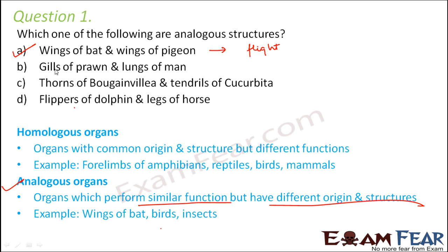Moving on to the next option: gills of prawn and lungs of man. Function-wise, lungs in man serve as a respiratory organ, and similarly the gills in prawn also act as the respiratory organ, so the function is the same. Man and prawn are again non-related groups. Structure-wise, lungs and gills are definitely not going to have the same structure. Therefore, gills of prawn and lungs of man are also analogous structures — they perform the same function but are structurally different.